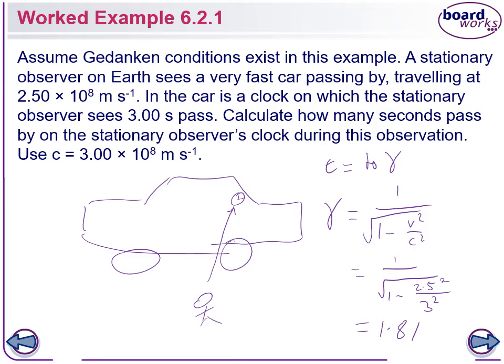So the time measured by someone outside of the frame of reference is going to be equal to that. Time is equal to T naught multiplied by lambda. So our observer is outside the frame of reference of the clock. So therefore, our clock is proper time, we need to multiply it by lambda. So T is going to be equal to 3 multiplied by 1.81, and we get 5.43 seconds.